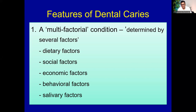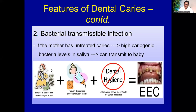Dental caries is a multifactorial condition, like diabetes. Its severity and occurrence are determined by several factors: dietary, social, economic, behavioral, and salivary factors. It is a disease with multiple contributing factors. And dental caries has a bacterial transmission component.